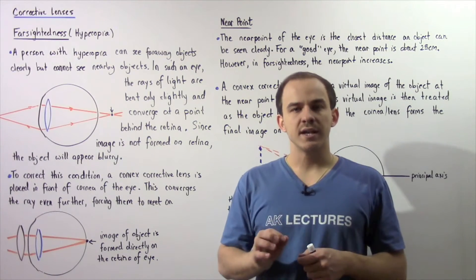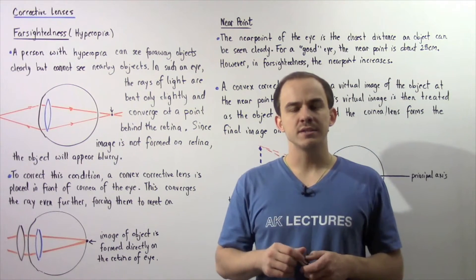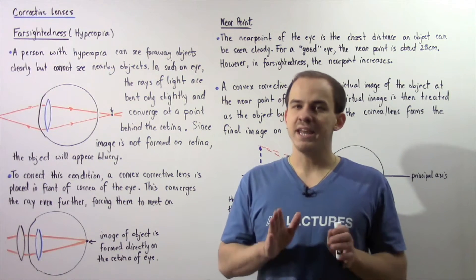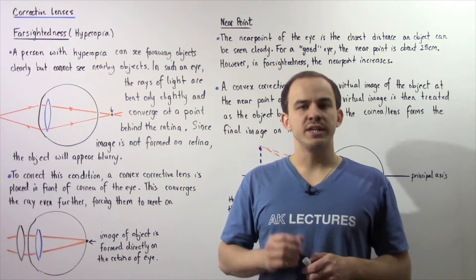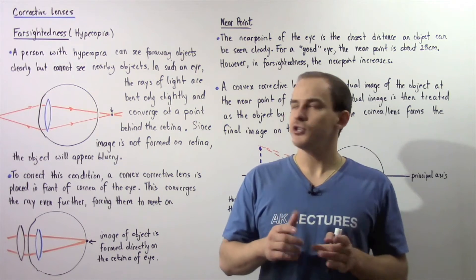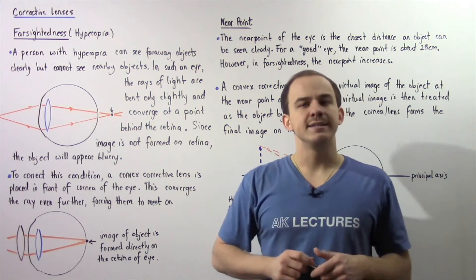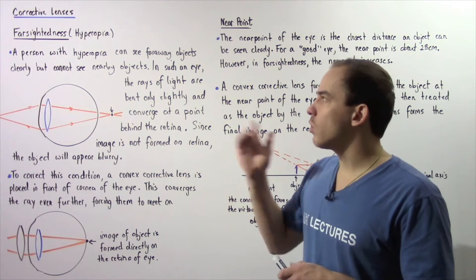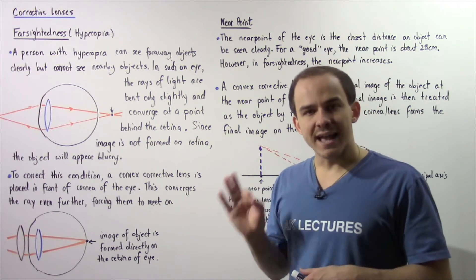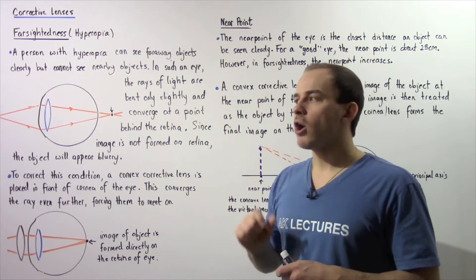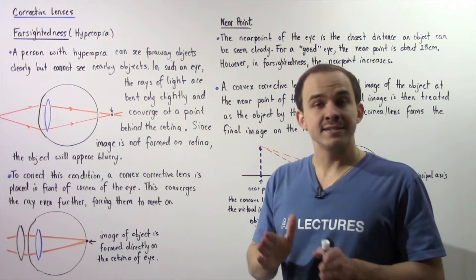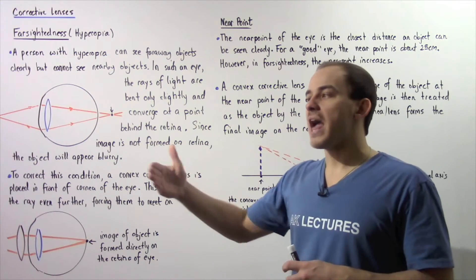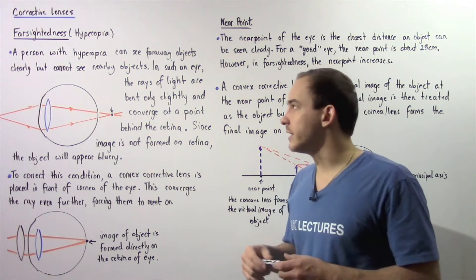In the previous lecture, we discussed how we can use corrective lenses to solve the condition of the eye known as nearsightedness or myopia. Now let's discuss how we can use corrective lenses to solve the condition known as farsightedness or hyperopia. A person with farsightedness or hyperopia can see objects that are very far away clearly, but they cannot see objects found very close to the eye clearly.